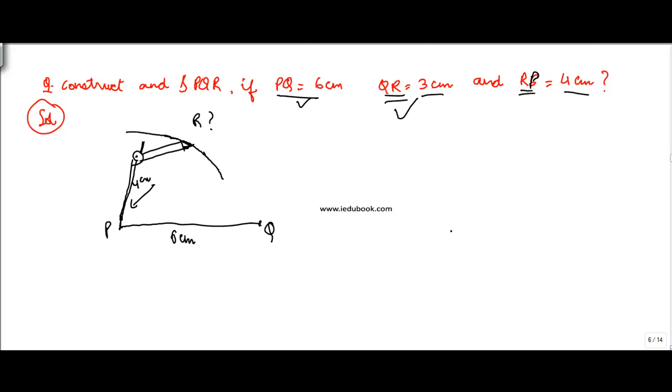So after doing this you would basically have something like this: you will have PQ and you would have an arc like this out here. Now keep the compass needle here, take the distance between the compass, the gap between the compass and the pencil side, as 3 centimeters and cut an arc.